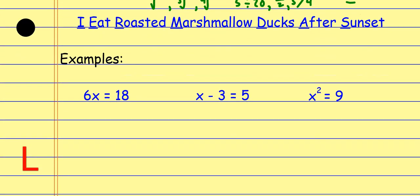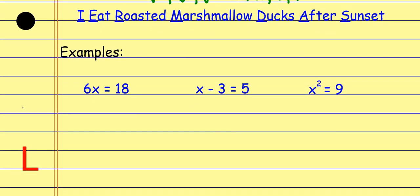For example, if I look at 6 times X equals 18, what's happening to X is I'm multiplying it by six. So I ask: what's the inverse operation? The opposite of multiplying by six is dividing by six. Whatever I do to one side of an equation, I'm required to do the same thing to the other side — it's all about balance. If I divide that side by six, I divide this side by six. Six divided by six is one, so I'm left with one X. And 18 divided by six is three. So X equals three.